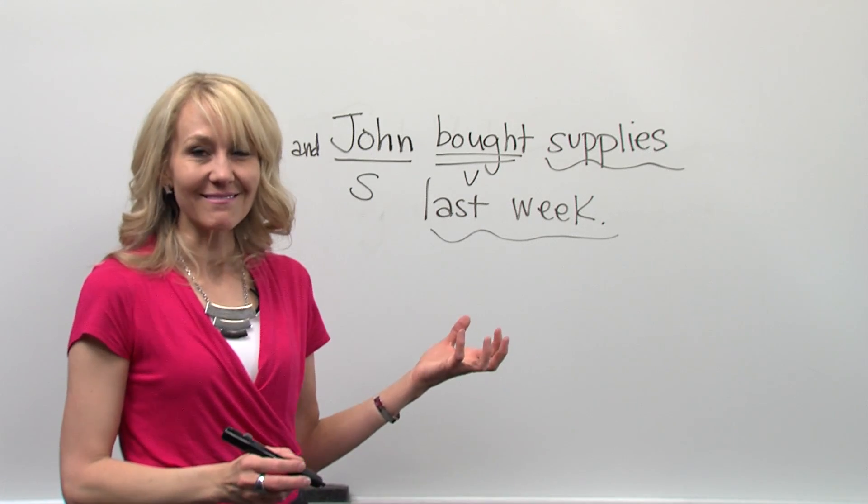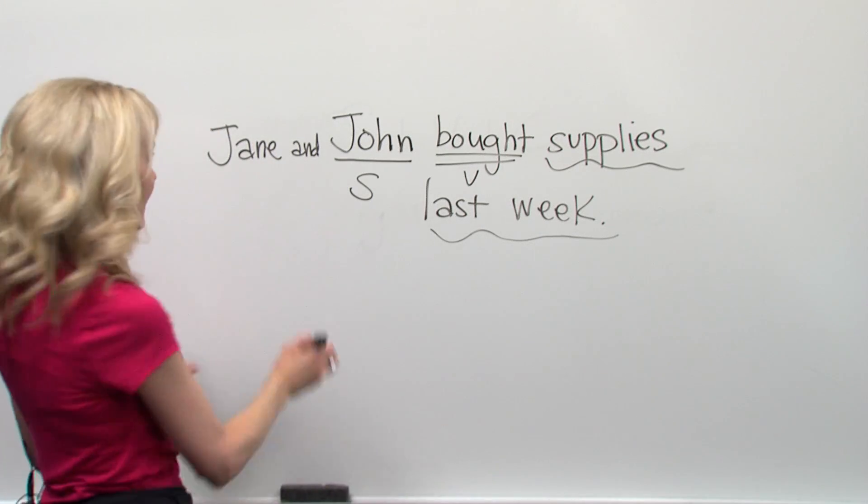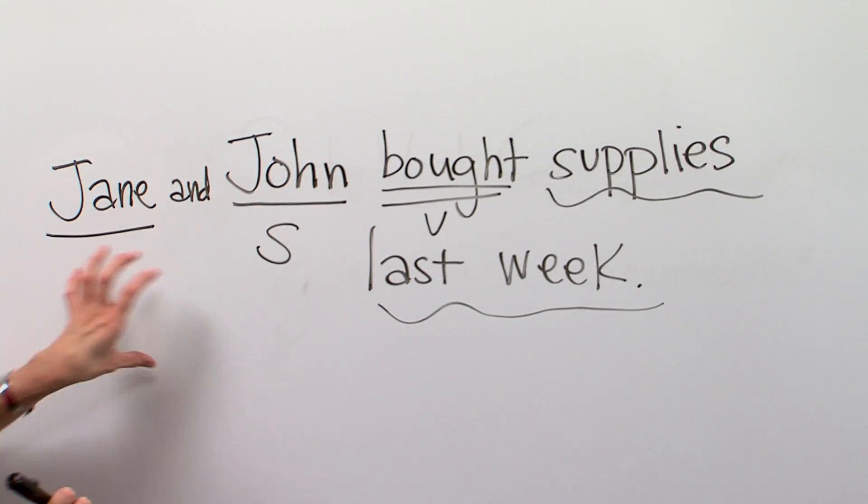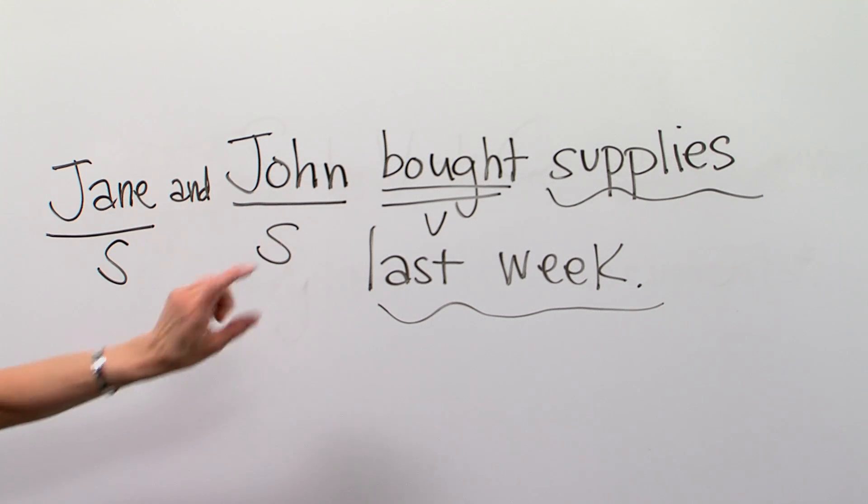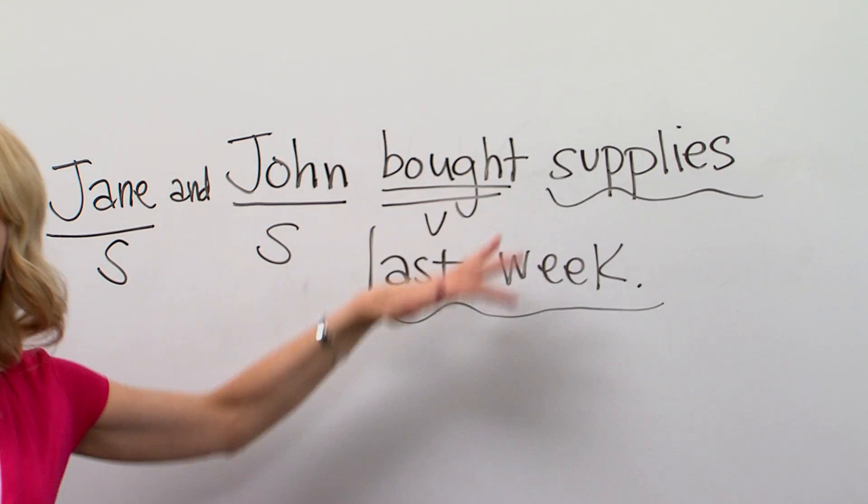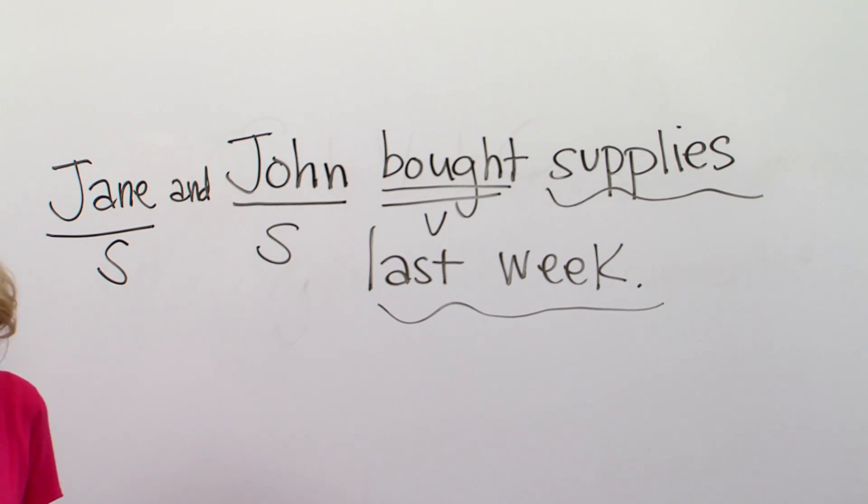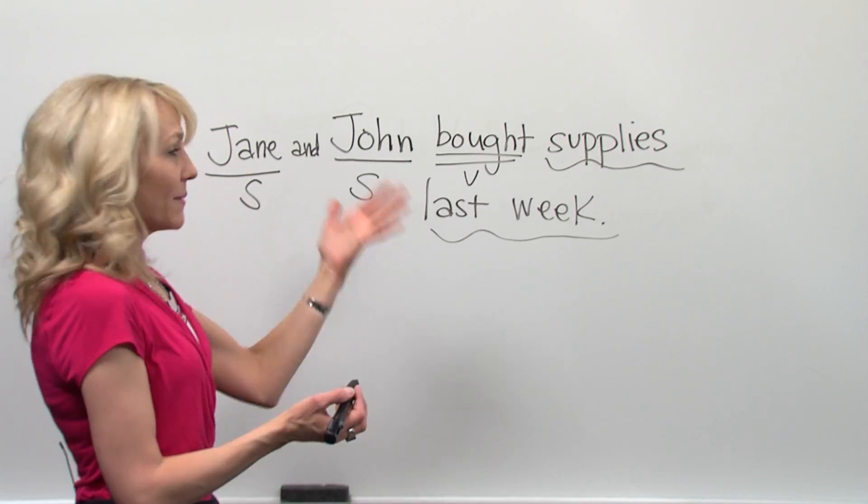So in this sentence, I have two main subjects. I'm going to underline both main subjects, Jane and John, and still have my main verb and still have all the complementary information within the sentence.